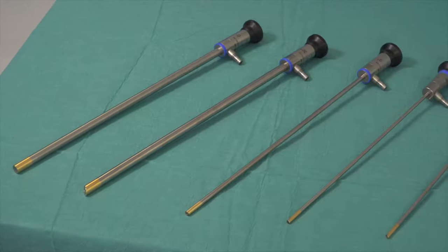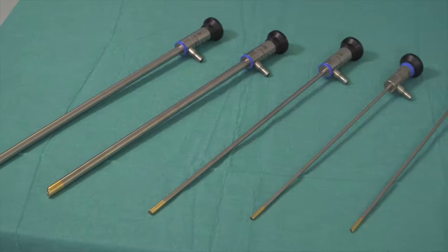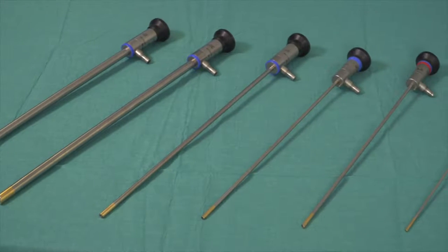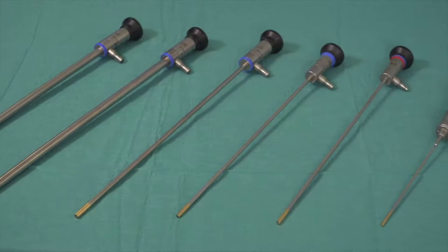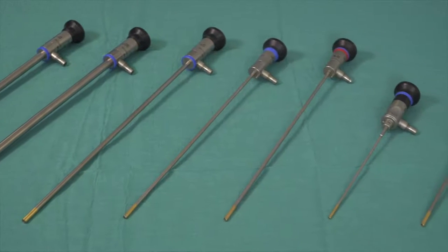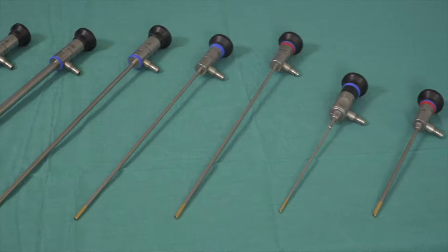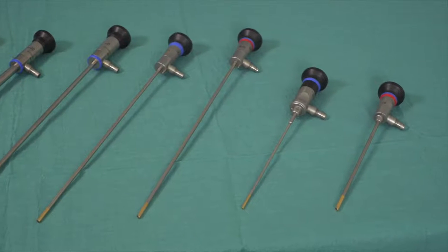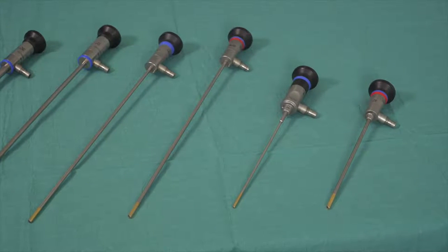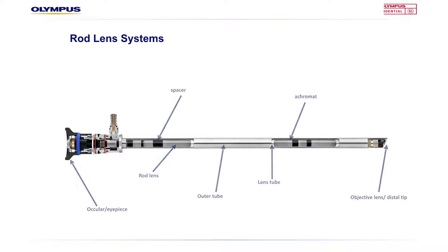Here in front of me I have an example of some of these different types of rod lens telescopes: a cystoscope, a hysteroscope, an arthroscope, and a laparoscope. Probably the most obvious similarity is that they're all rigid. This is because they're all filled with glass rod lenses, spacers, and achromats capable of transporting excellent quality images.